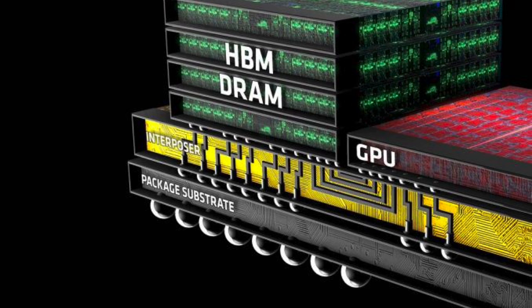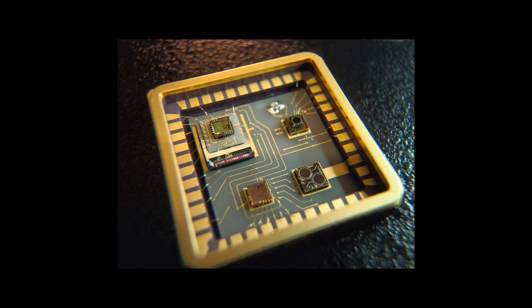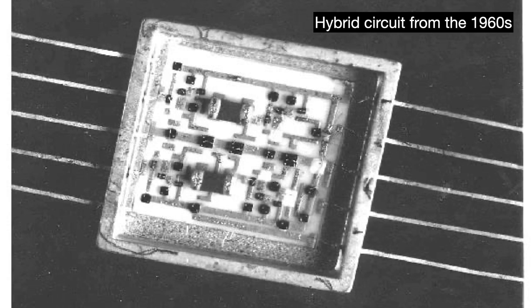Let's start with 2.5D integration. The concept of side-by-side die stacks dates back to the 1960s with what are called hybrid circuits. Hybrid circuits combine various devices like integrated circuits and RF/microwave units on top of a substrate, often made for specific functions that a monolithic integrated circuit could not do at the time. The substrates were often made of ceramic with bonded wires, and these hybrids often had lids which could be welded shut to provide protection from the outside world.